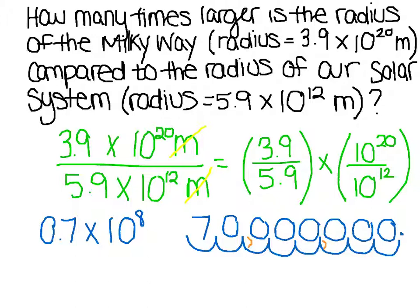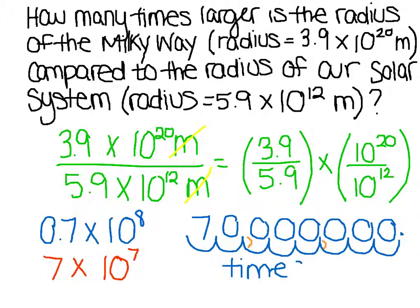Now, if I wanted to write this back in proper scientific notation, I'd have 7 times 10 to a positive exponent. Counting: 1, 2, 3, 4, 5, 6, 7 — so it's 7 times 10 to the 7th. But remember, this problem is asking how many times larger the radius of the Milky Way is compared to our solar system. Would we really say it's 7 times 10 to the 7th times larger? No. Your answer is actually going to be 70 million times larger. You want your answer in standard notation — but if it asks for both, provide both forms. And this is one way we can apply scientific notation in the real world.